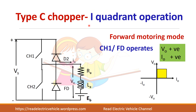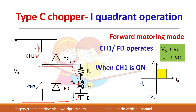To achieve first quadrant operation, the first switch is operated along with the freewheeling diode. When switch one is on, current flows through the switch, through the motor, and returns. The output voltage V0 equals Vs, since this point is connected to plus Vs. The current direction is positive — current flowing from top to bottom is assumed positive.